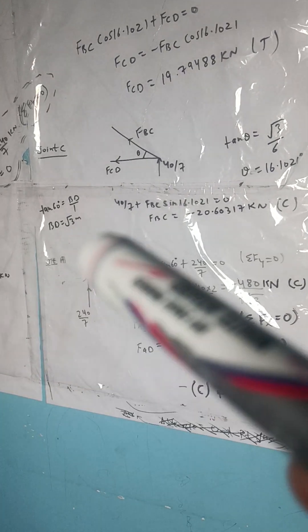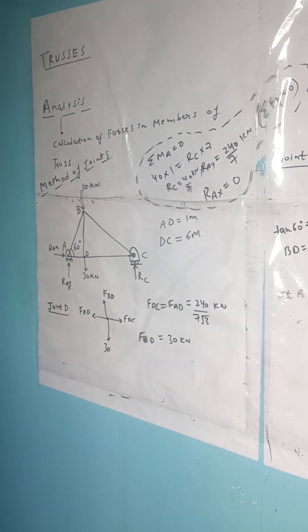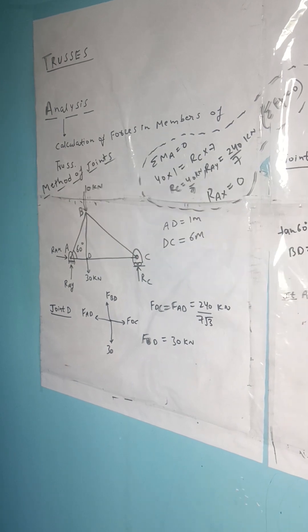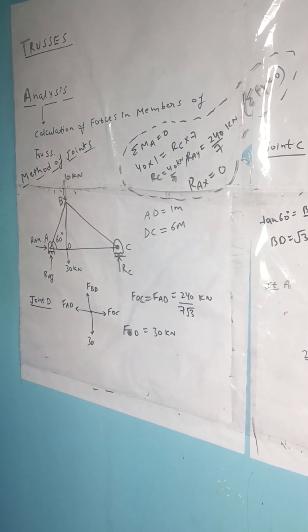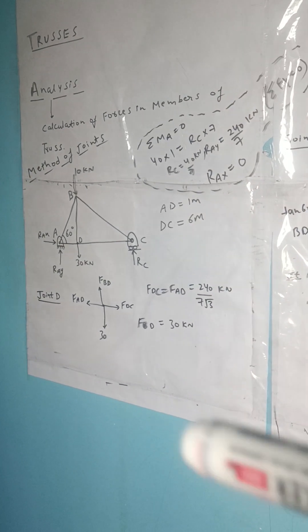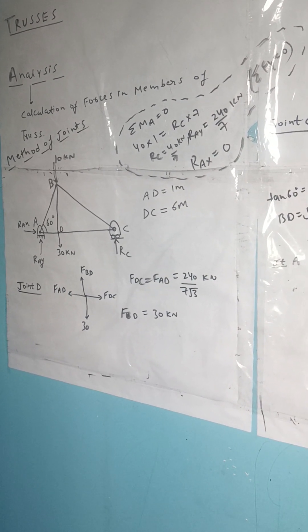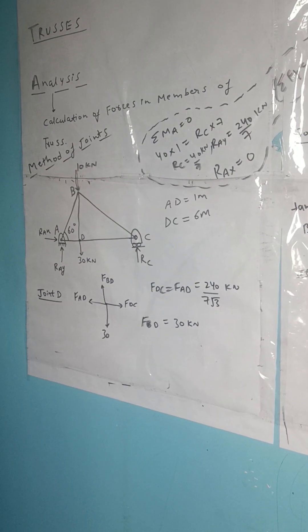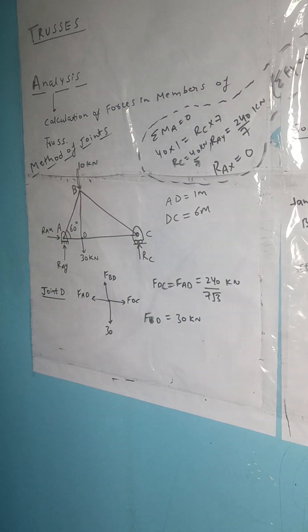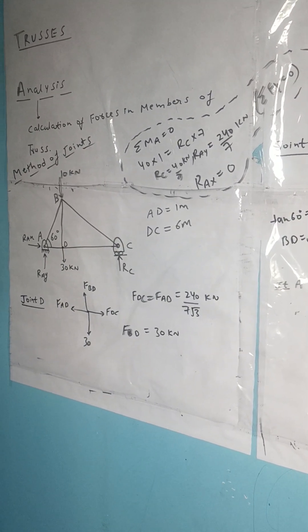We start with joint A, where the angle is 60 degrees and FAB and FAD are the forces. We assume forces at joint A to be tensile in nature. If a force is coming away from the joint, it is tensile; if it is coming towards the joint, it is compressive. After solving the equilibrium conditions, if the value comes positive it is truly tensile; if negative, it is compressive. In the method of joints, we calculate forces at one joint then move to the next.